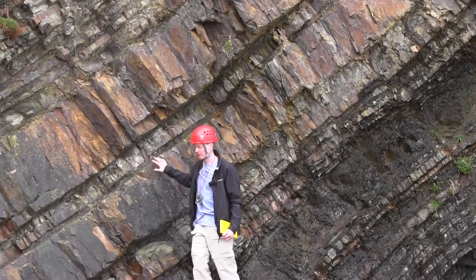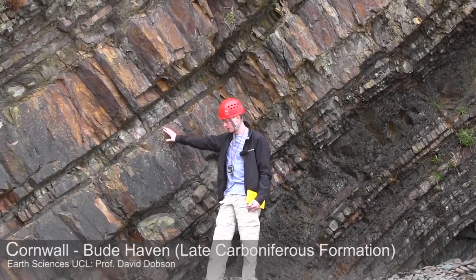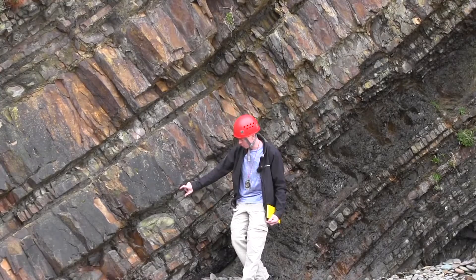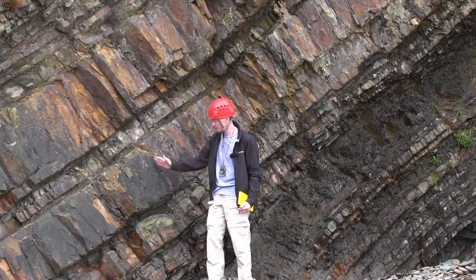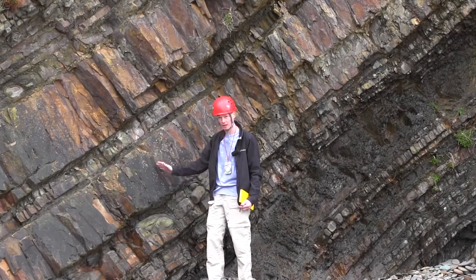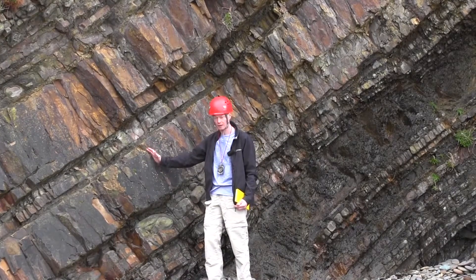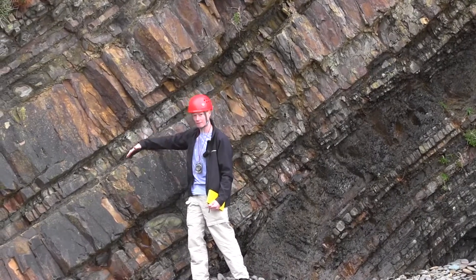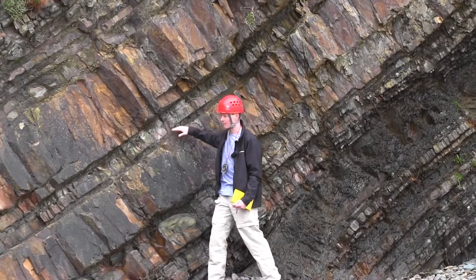Here we have some massively bedded sandstones which are interbedded with much thinner but quite fine shales. The sandstones show some really quite nice massive jointing — the jointing tends to be perpendicular to the bedding — whereas in the shales you can see that there's cleavage that runs very tightly parallel to the bedding.